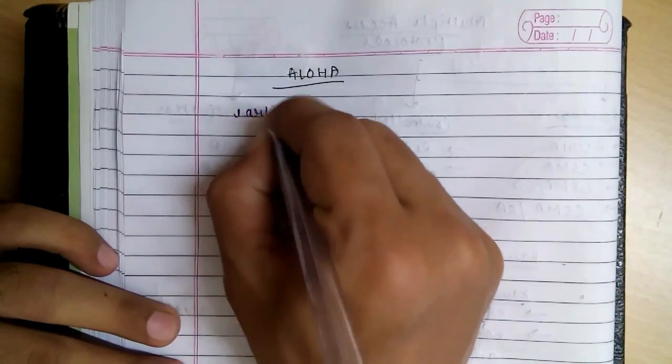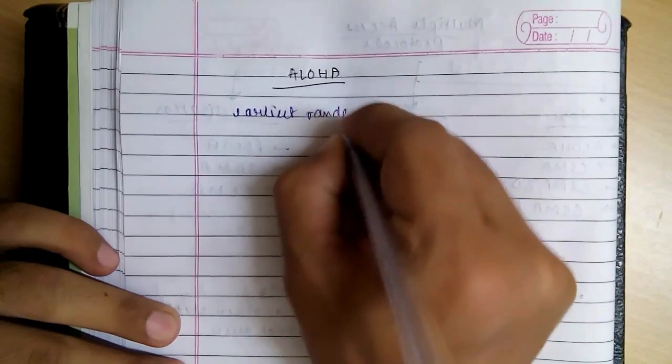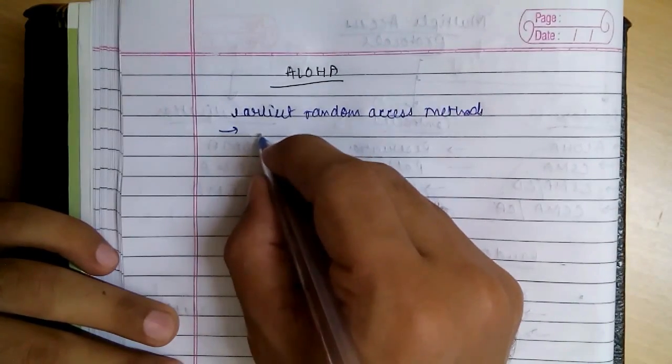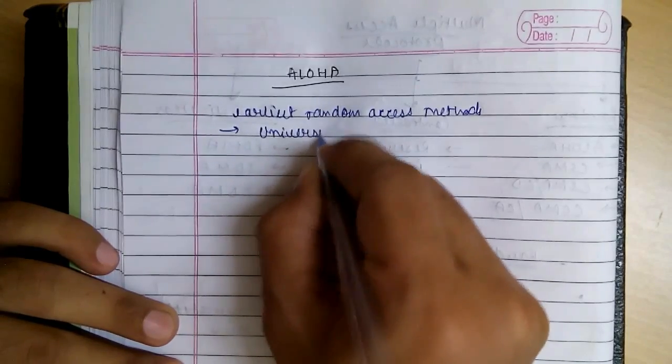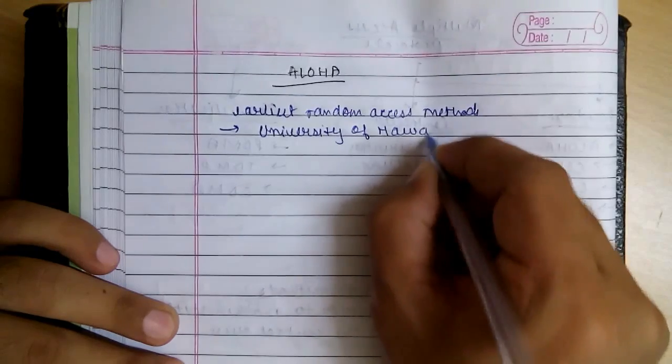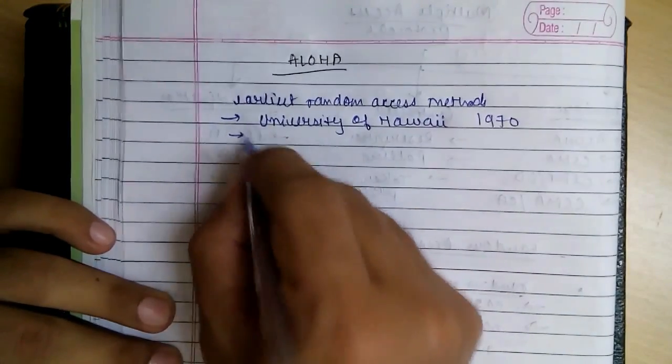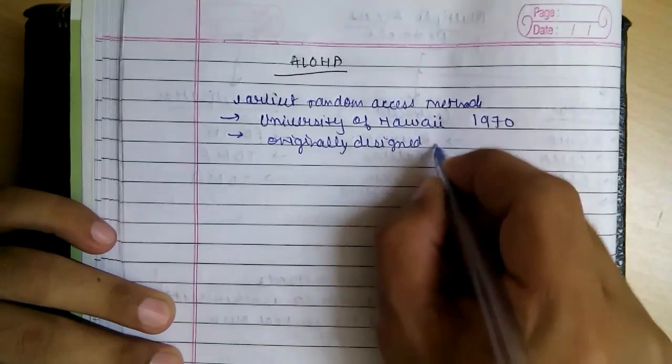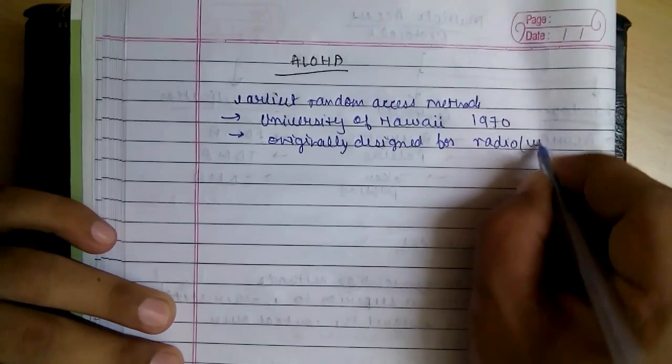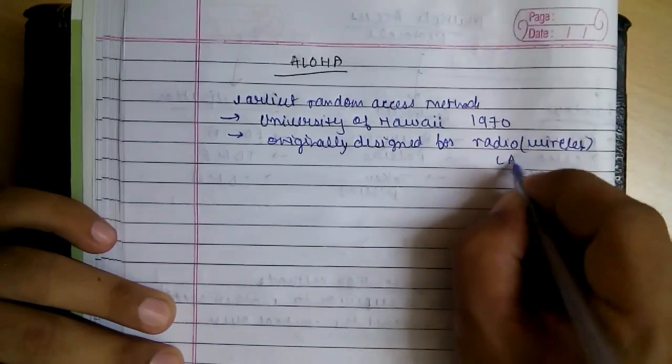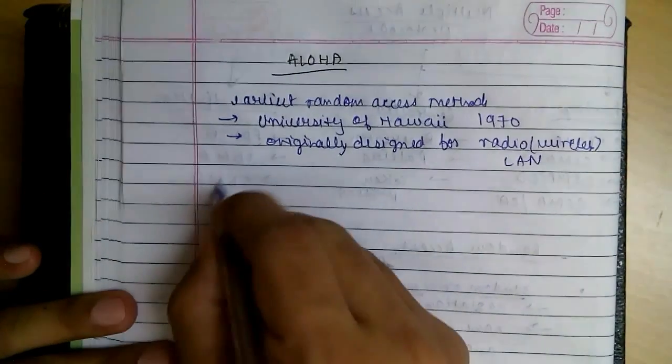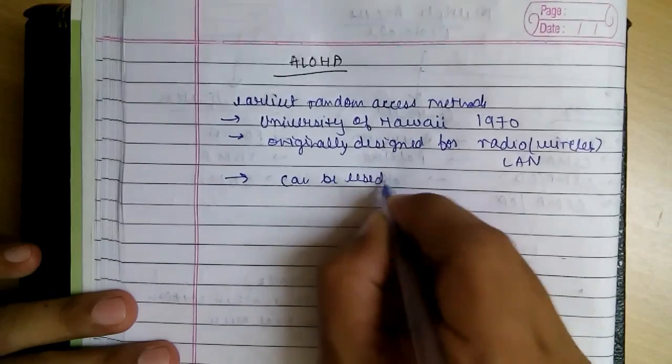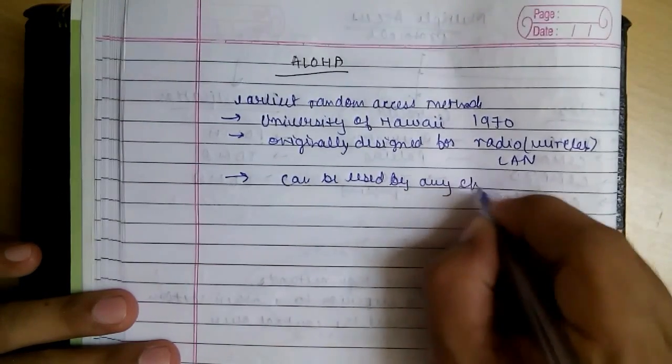Aloha is one of the earliest random access methods. It was devised in University of Hawaii as early as 1970. It was originally designed for radio, that is wireless LAN, but that doesn't mean it cannot be used in other applications. It can be used by any shared medium.